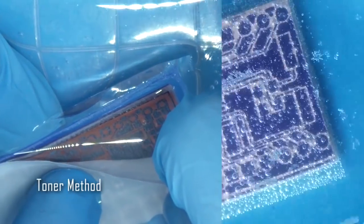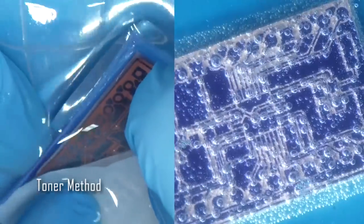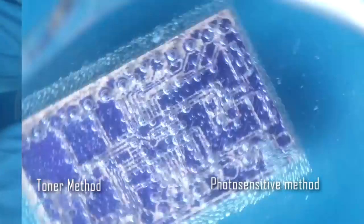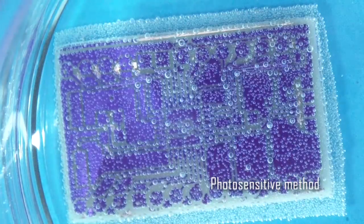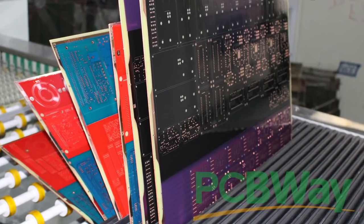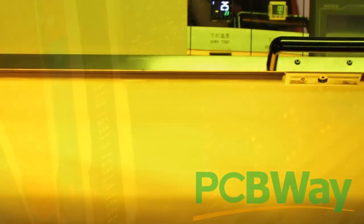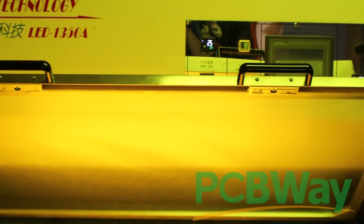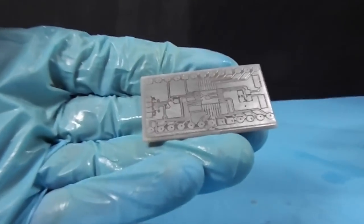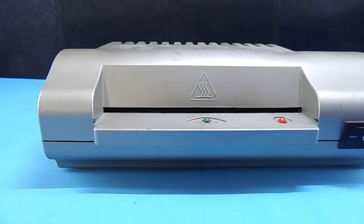We have two methods to make PCB at home. The best method is photosensitive PCB. PCB factories use this method to make PCBs for their clients. It gives nice and clean traces. It's a little bit complicated method but results are very nice.